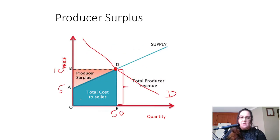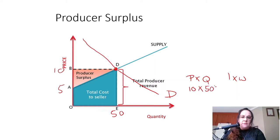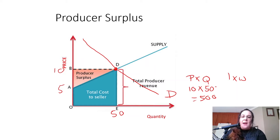Let's work out this rectangular area: price times quantity, or length times width — it doesn't matter. To calculate revenue, I'll use the revenue formula. My equilibrium price is $10 times the quantity of 50, which gives me $500 in revenue for the producer. But remember, the producer has costs, so part of this is profit and the remainder is cost — which is why we indicate that blue area separately.